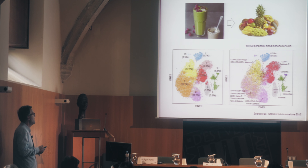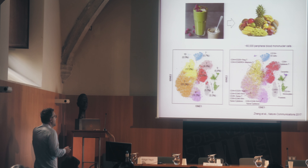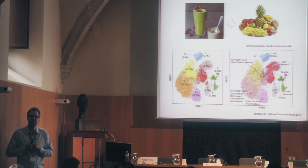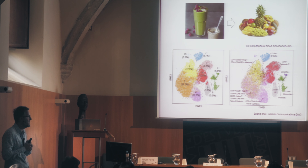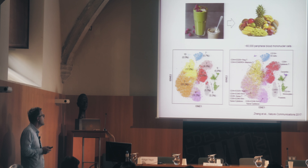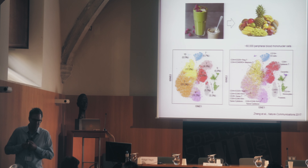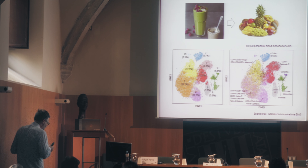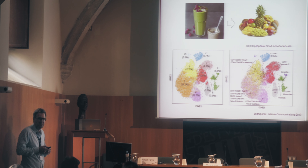For example, with 60,000 peripheral blood mononuclear cells (PBMCs), before we would take all RNA molecules from the sample and compare averages across populations and conditions. Now we can stratify or group single cells into populations to do a more refined analysis — looking at individual populations but also comparing them across multiple samples.